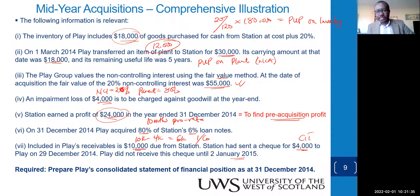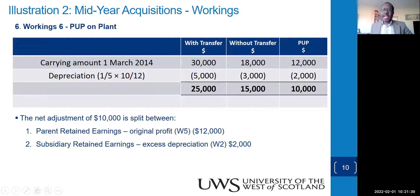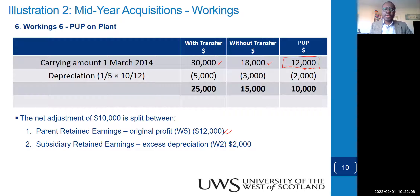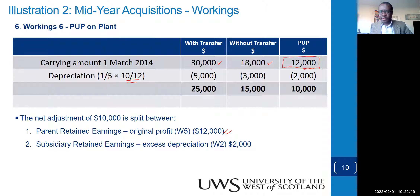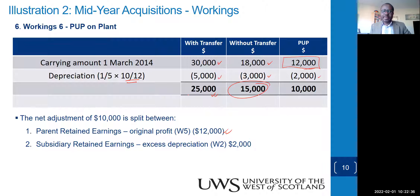Working 6 — the plant transfer: transferred at 30,000 but fair value is 18,000, so the PUP is 12,000. Remove this entirely from the seller (parent's) retained earnings. Depreciation: useful life 5 years = 6,000/year, but we only held it for 10 months, so prorate: 10/12 × 6,000 = 5,000 with transfer; without transfer it would have been 3,000. The excess depreciation charged is 2,000 — this is the net PUP remaining.